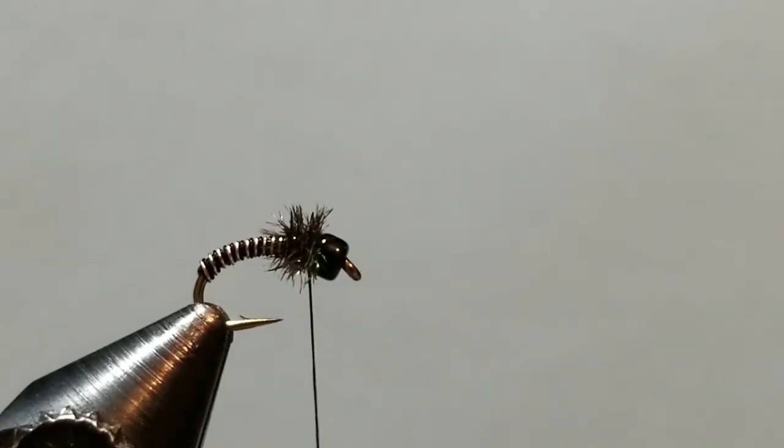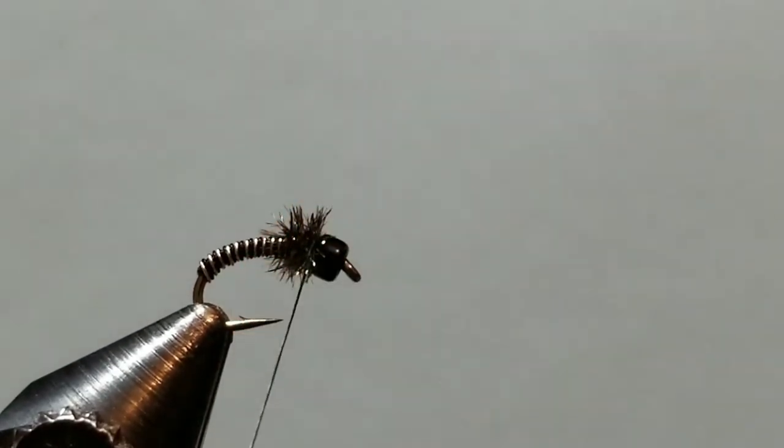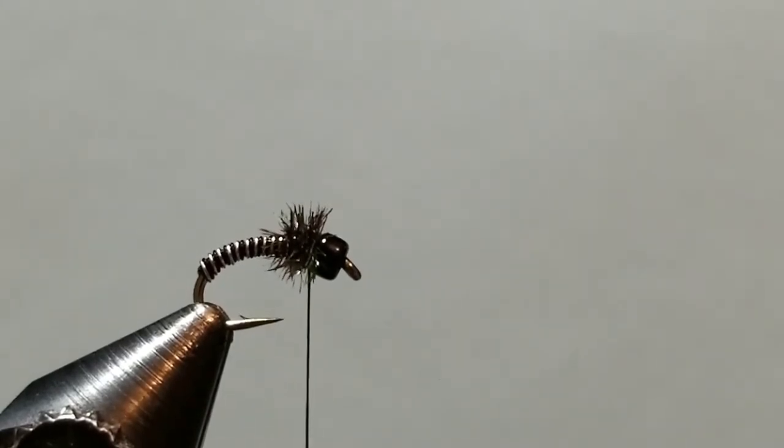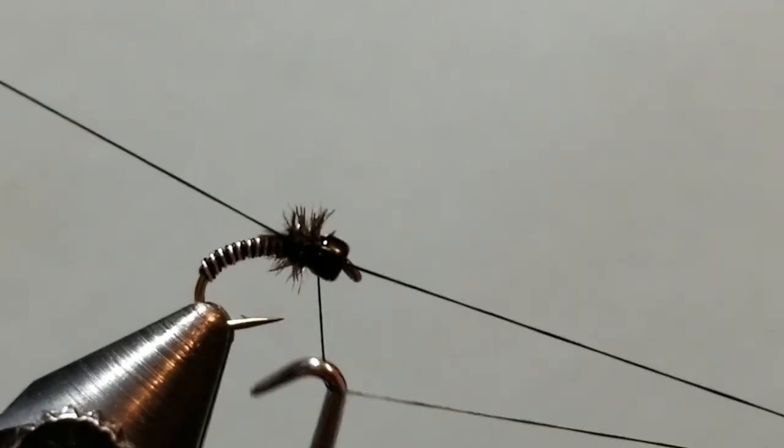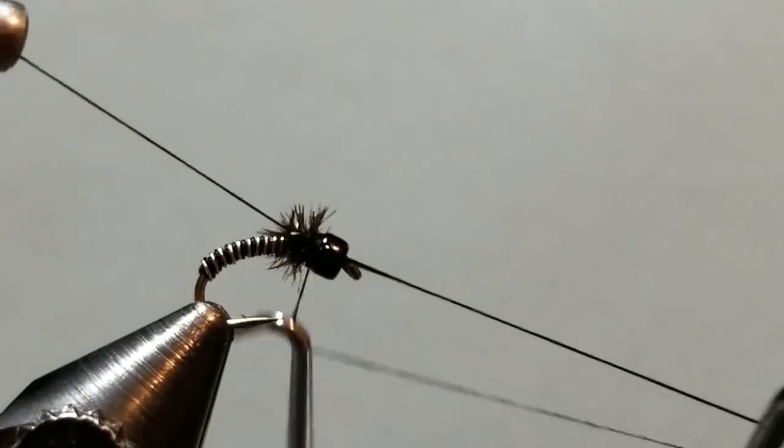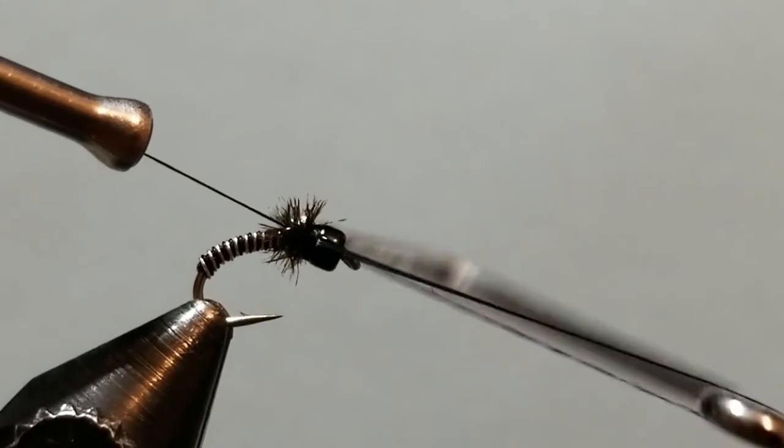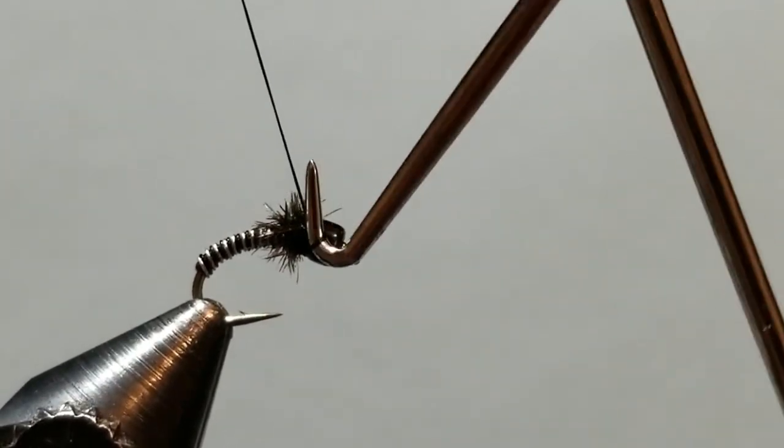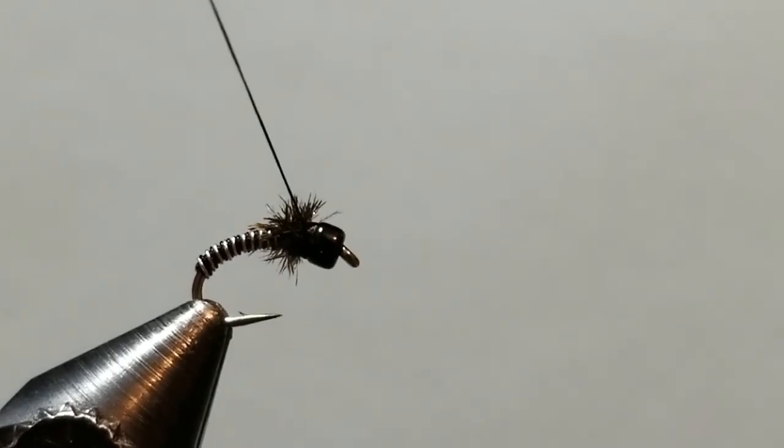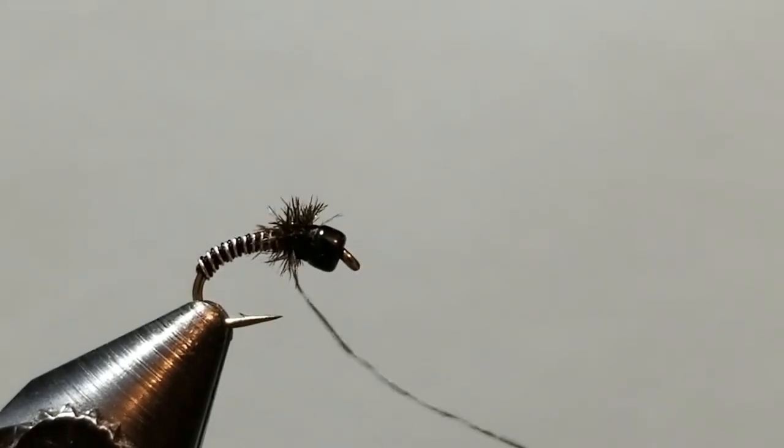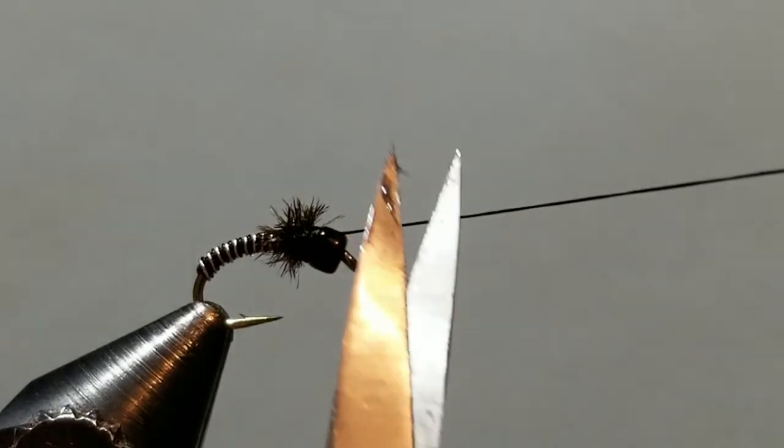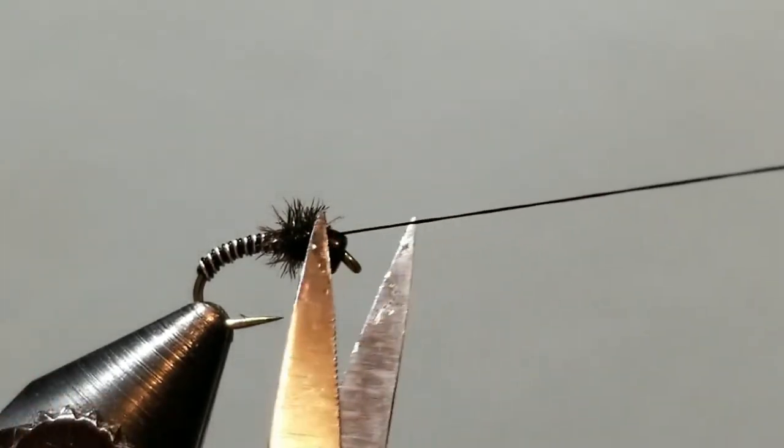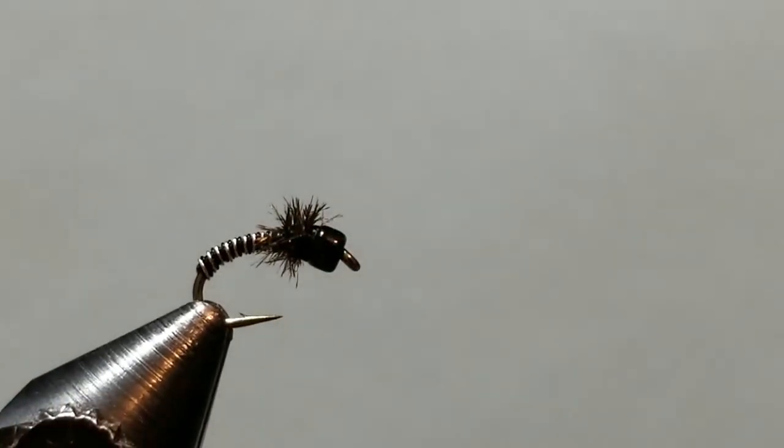And now, we're pretty much done with this bad boy. All we've got to do now is just get a little whip finish going on here. You can do it with your hands or with a tool. On the smaller flies, I like using the tool. Two, three, four, and five. Five is my favorite number. You may have a different favorite number. Hey, like I said, this is fly tying. There are no rules. Only imagination. Trim that thread off.